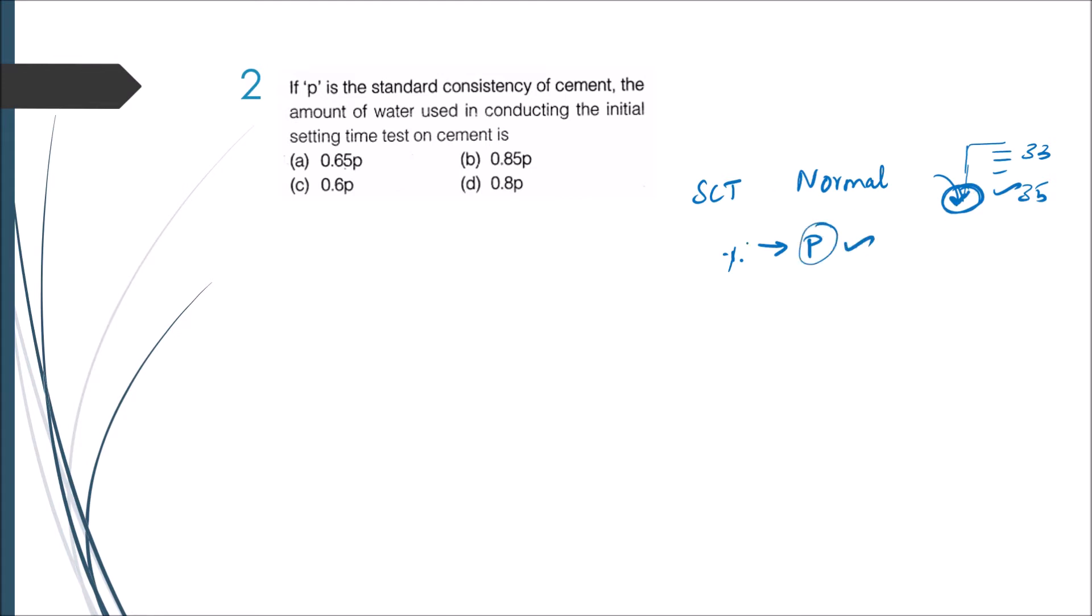From this we will be obtaining P. For initial setting time and final setting time we will use 0.85 times the normal consistency of the cement and add that much amount of water to it. Whereas if we come to Le Chatelier's apparatus which is used for soundness test, we will go for 0.78 times P. For strength test we will go for P/4 + 3 percentage. So for initial setting time we will go for 0.85P.